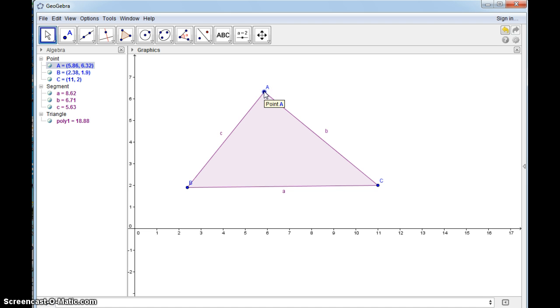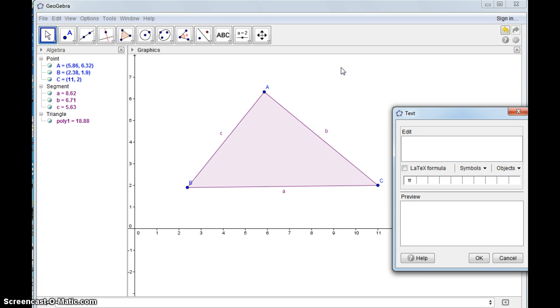First off, the inscribed circle is inside of this triangle and it touches each side at one point. The center of the inscribed circle is called the incenter and this is the center of the inscribed circle. It's found by intersecting the angle bisectors.